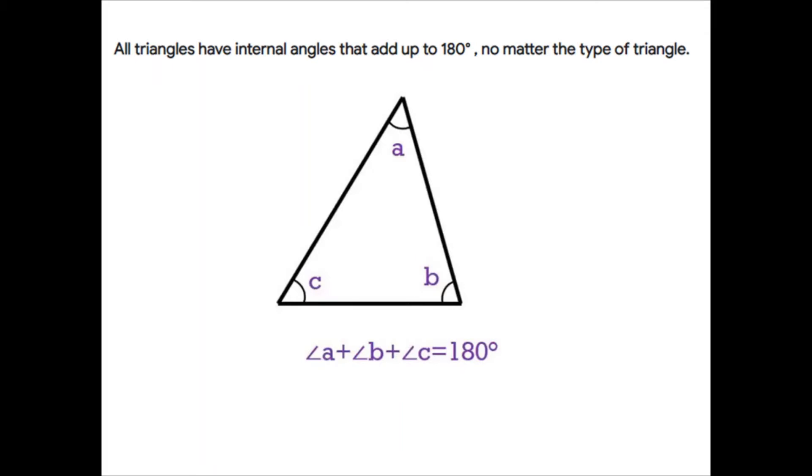So, angles in a triangle, they add up to 180. No matter the type of triangle it is, these angles will add up to 180 degrees. Angle A plus angle B plus angle C is equal to 180. I want you to make sure you understand that angles in a triangle, no matter the type of triangle, they add up to 180 degrees. And we're talking about the internal angles, basically the inside angles of a triangle.